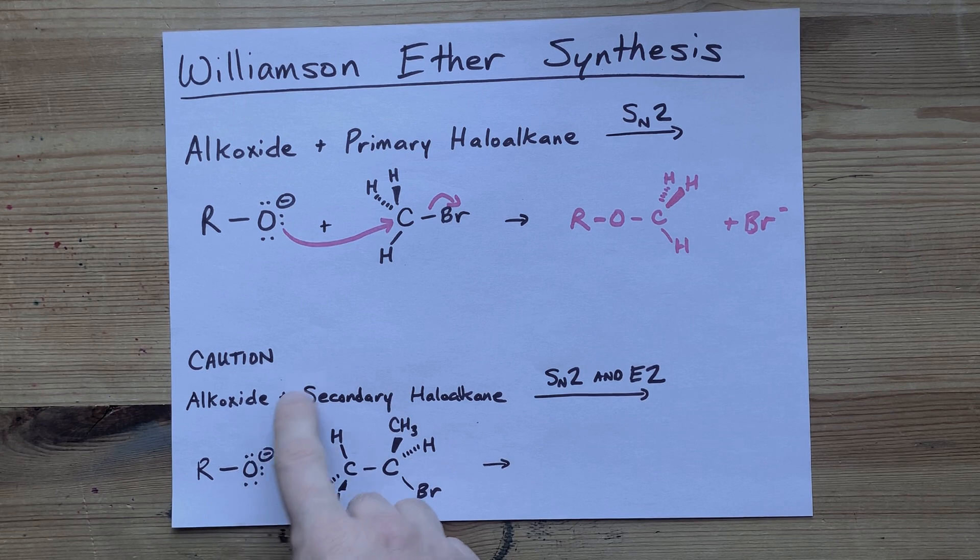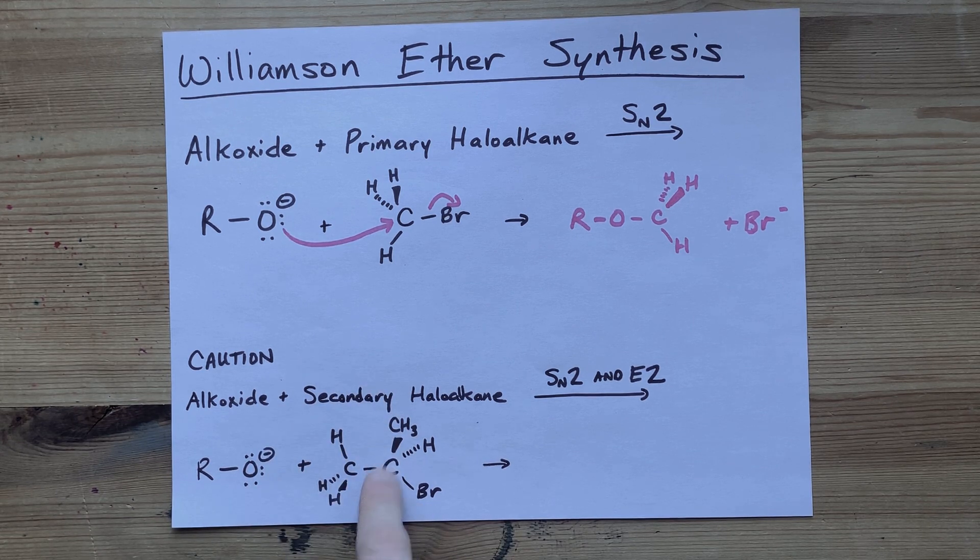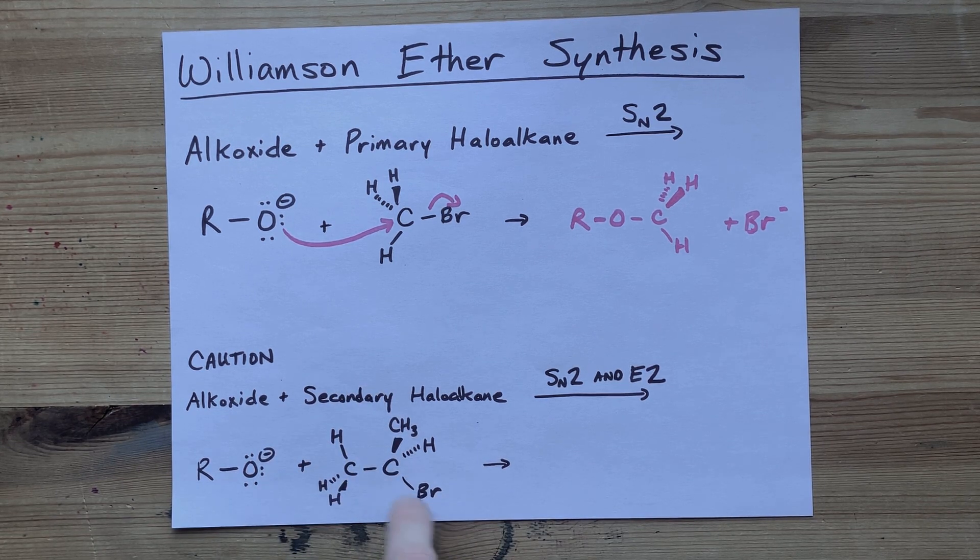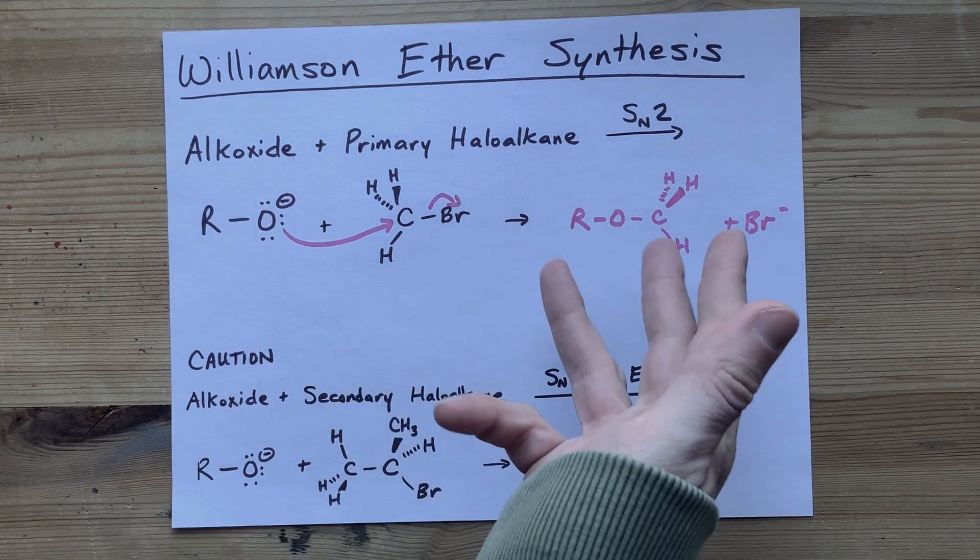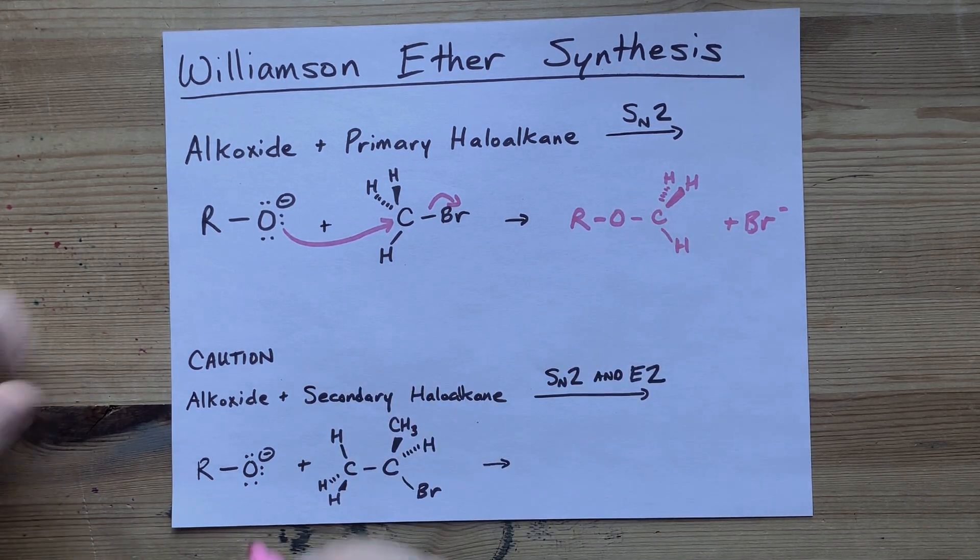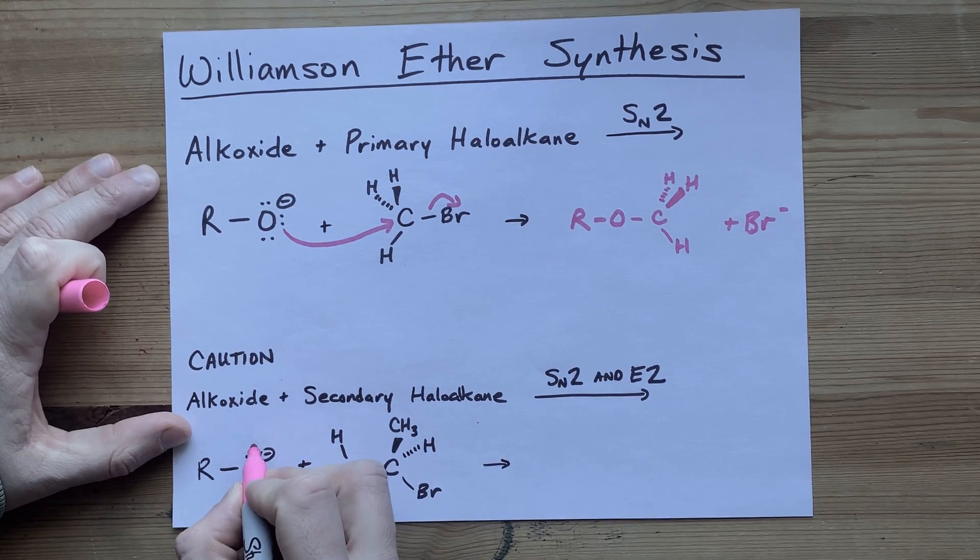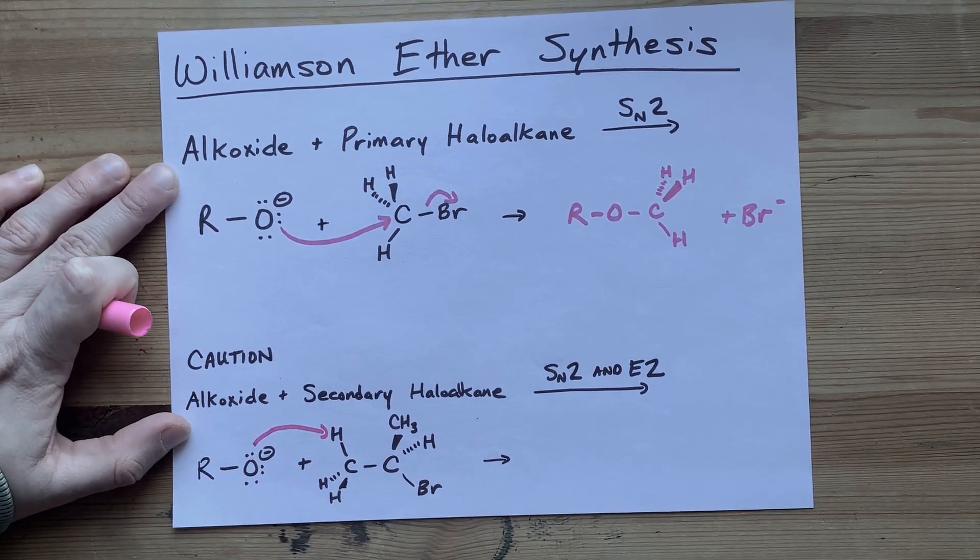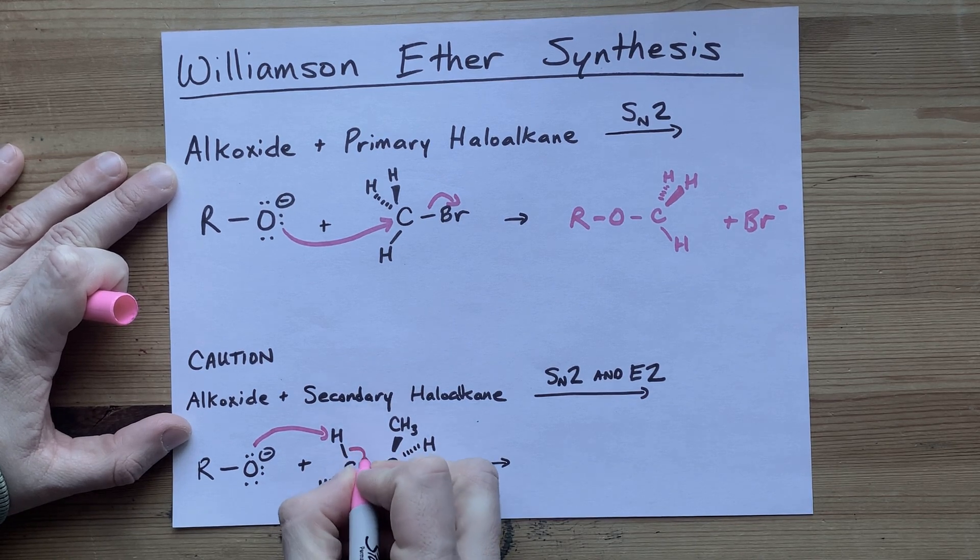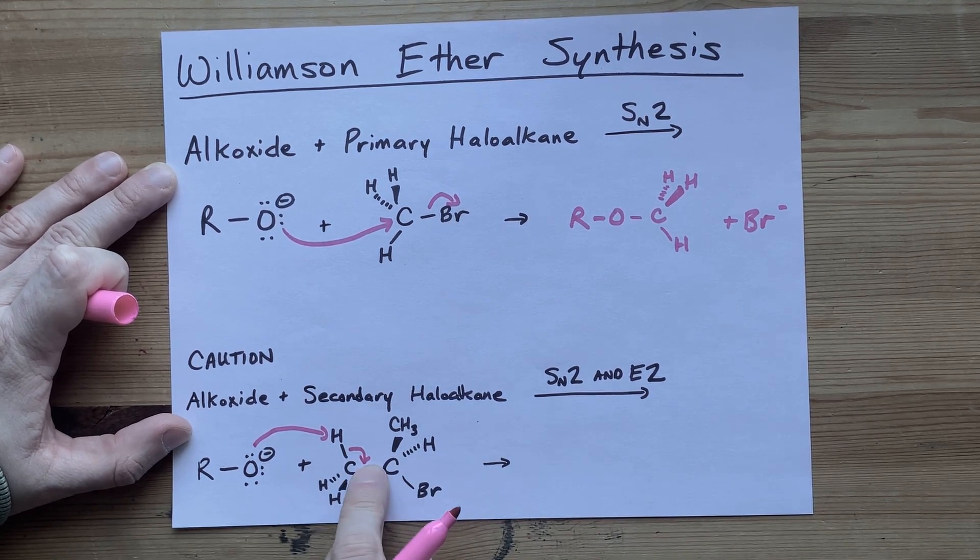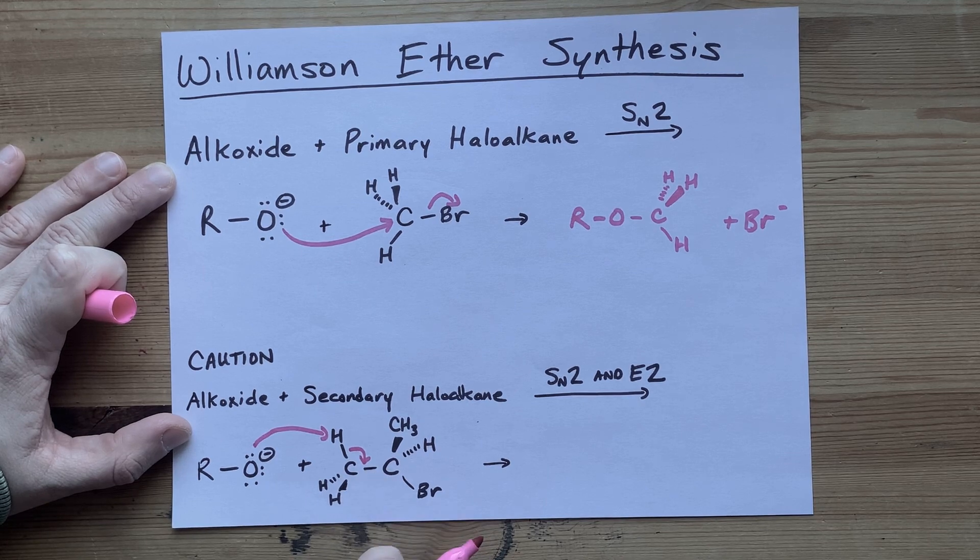So yes, this can attack that carbon and the bromide will fall off and you'll still end up with an ether. But also you have a side reaction that competes with it. This alkoxide can take away this H, the electrons in that bond end up flowing here into a pi bond between these two carbons.